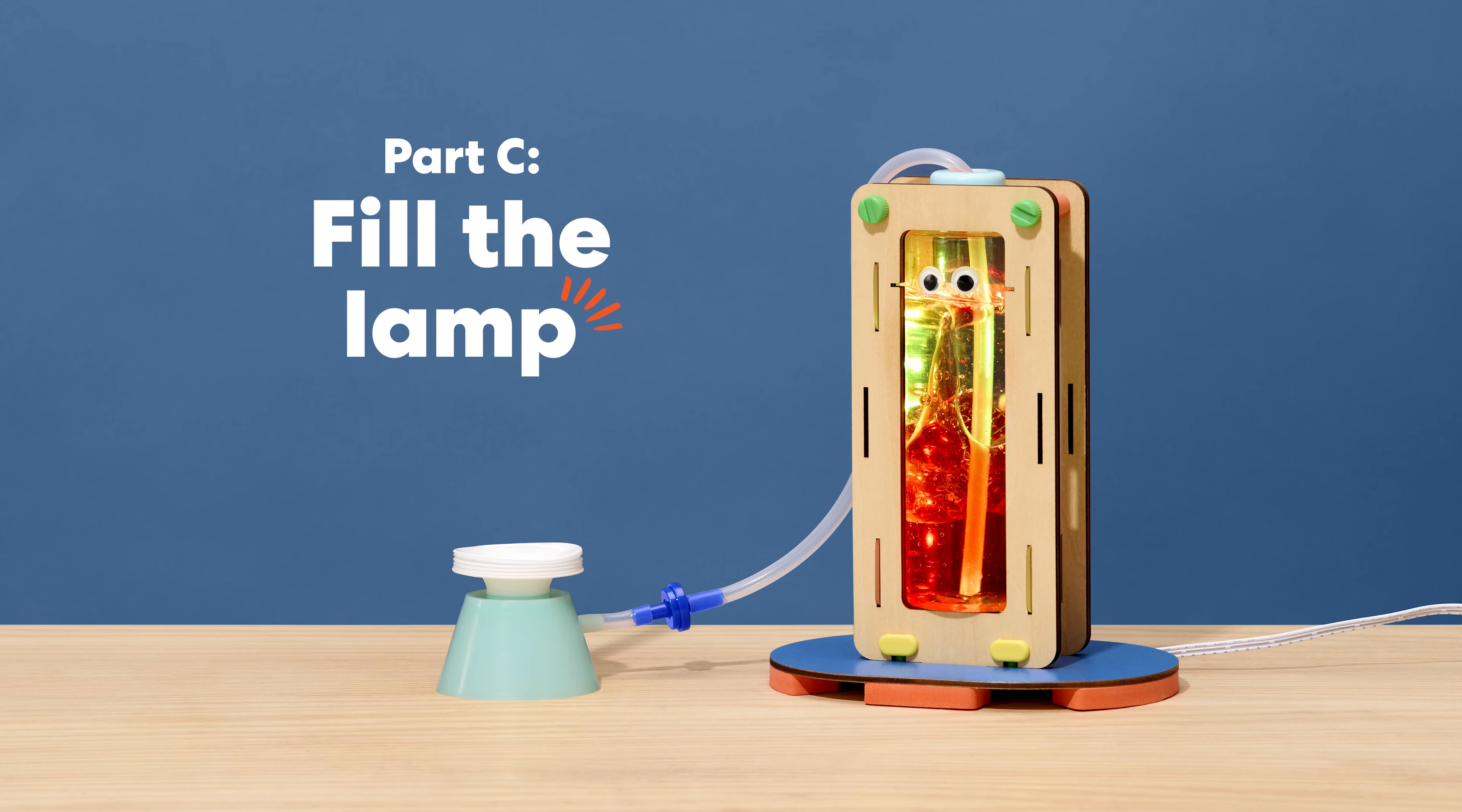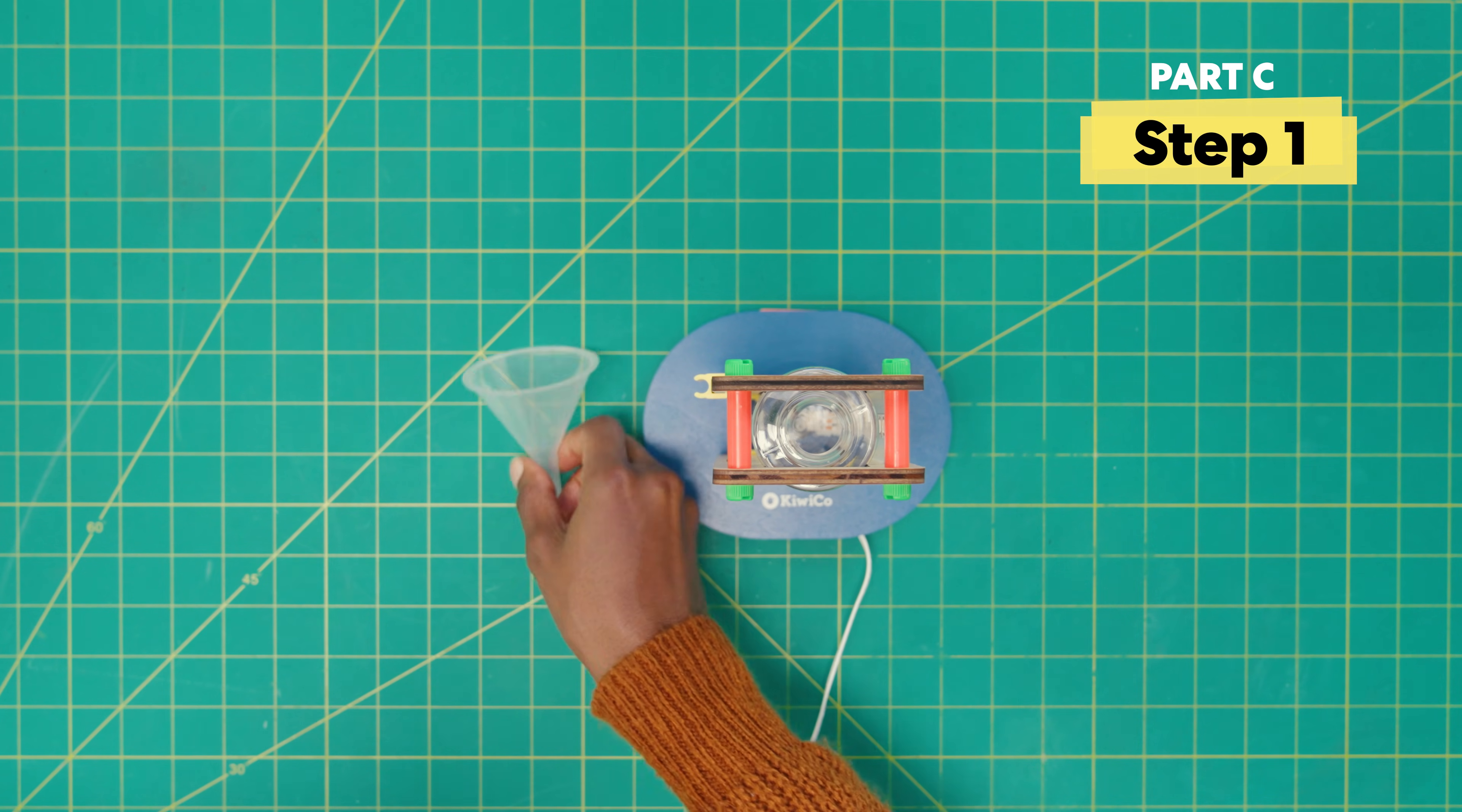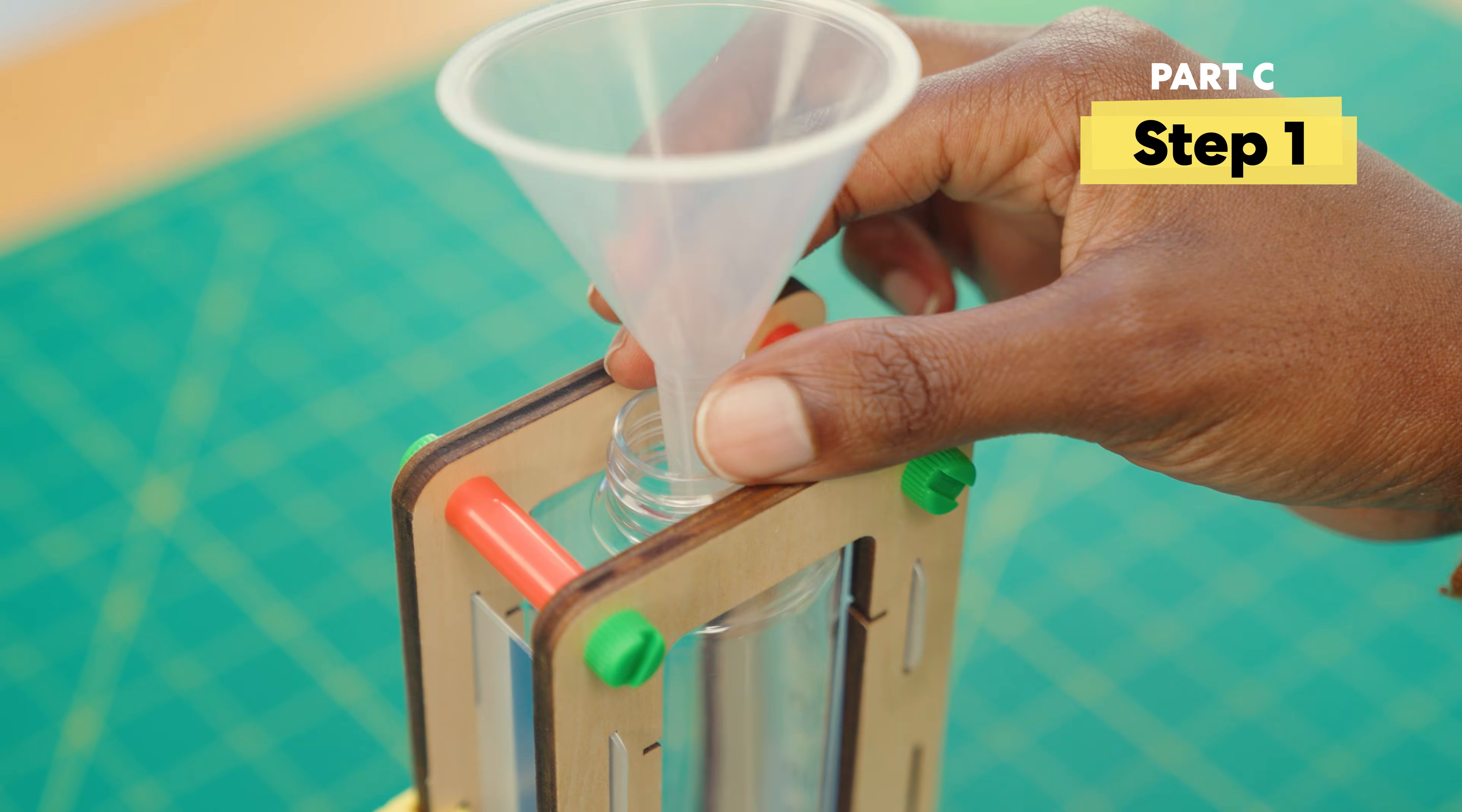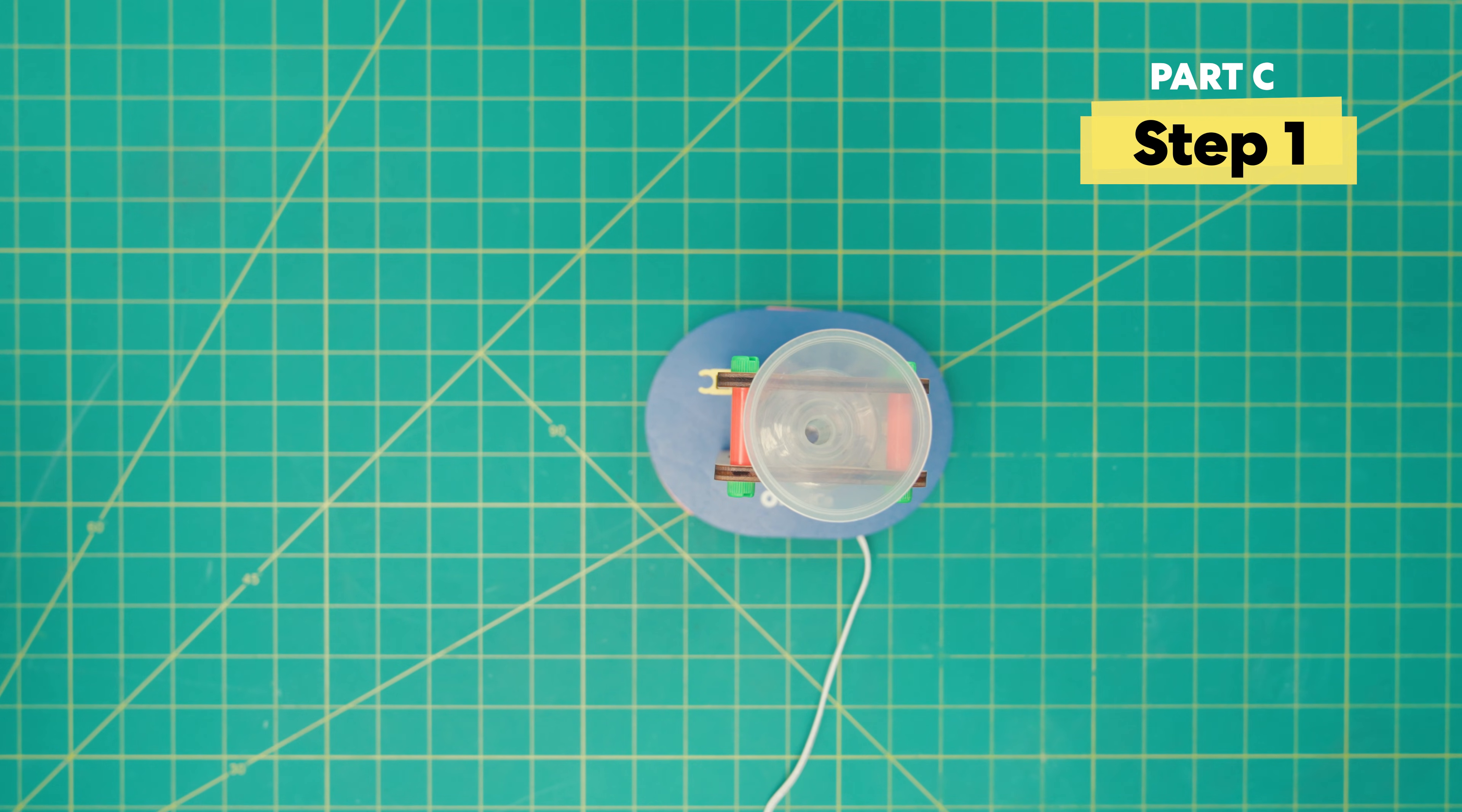Part C, fill the lamp. First up, rest the funnel on the bottle. Do the rest of the project on a flat work surface that is easy to clean just in case.